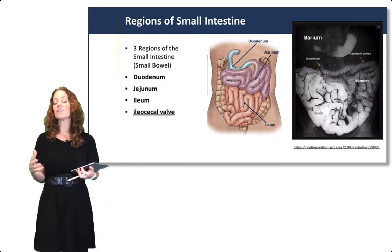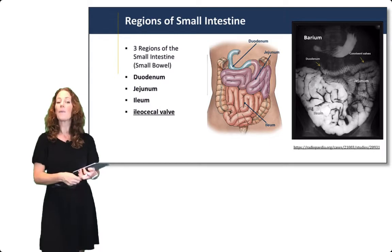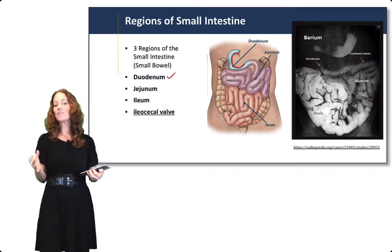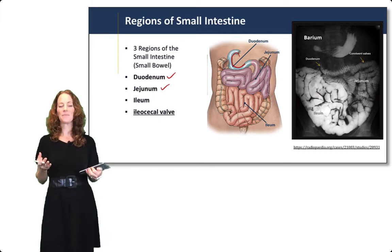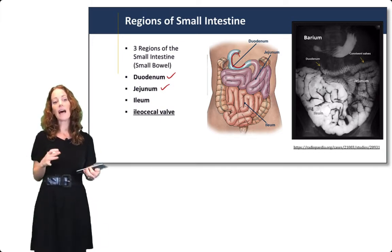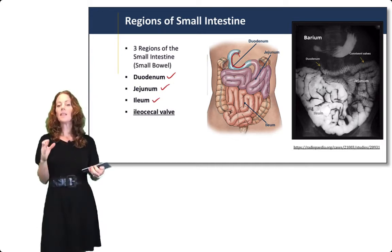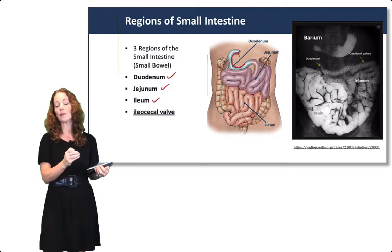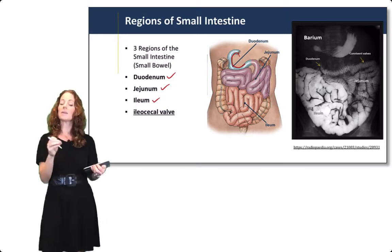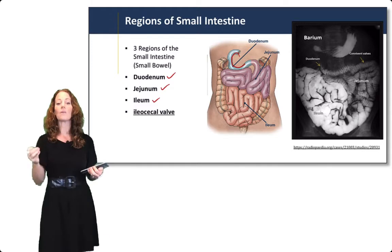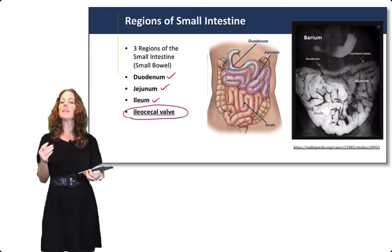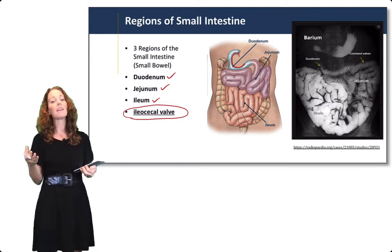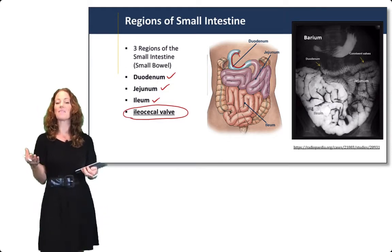The small intestine, also called the small bowel, has three regions. The first region is the c-shaped portion called the duodenum. After that we have the jejunum, and the last part is the ileum. The ileum then moves contents from the small intestine into the colon, with the first part of the colon being the cecum. The valve between the ileum and the cecum is the ileocecal valve. These regions look different anatomically and also radiologically, as shown here in a barium study of the small bowel.